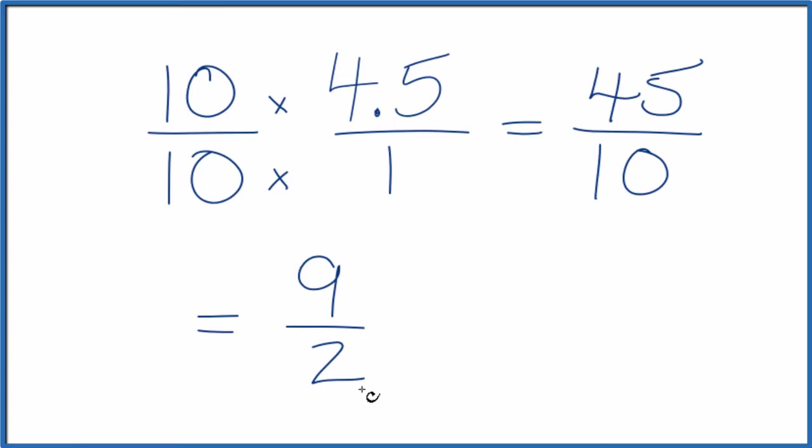So now we have this improper fraction. If we want to change it to a mixed fraction, 2 goes into 9 four times with 1 left over. So 4 and 1 half.